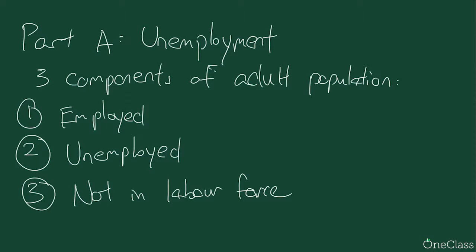In order to understand unemployment, we have to first understand what is the adult population. There are three components of adult populations. The first ones are those who are employed — those who have a paid job. The second ones are those who are unemployed — those who currently do not have a job but are currently looking for one. And the last ones are those who are not in the labor force — those who do not have a job and are not looking for one.